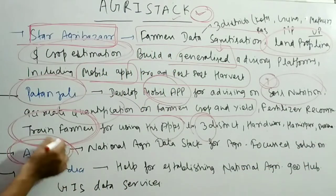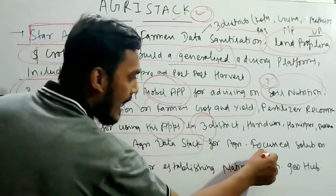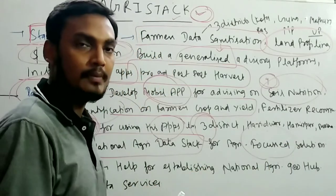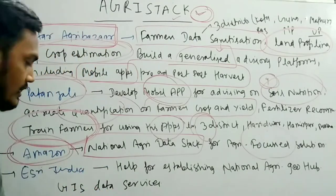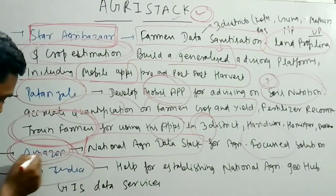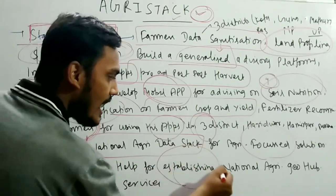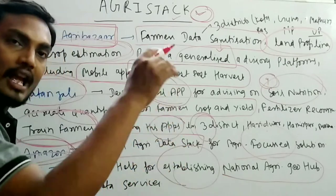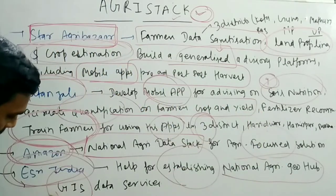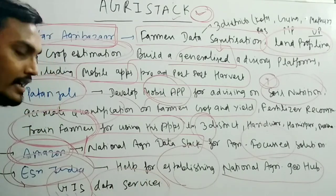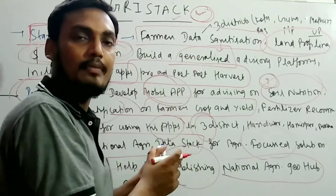Amazon Internet Services will provide a national agri data stack for agri-focused solutions — any problem related to the sector, the solution will be provided by Amazon. ESRI India will help the ministry establish a national agriculture hub and provide Geographical Information System data services through a GIS platform.